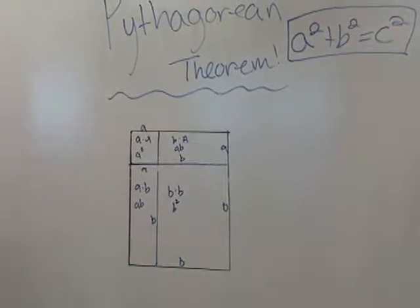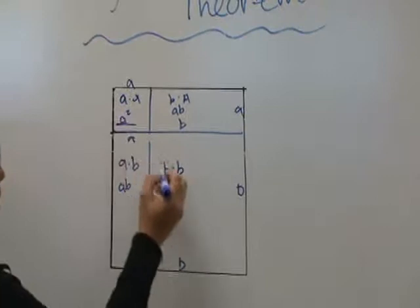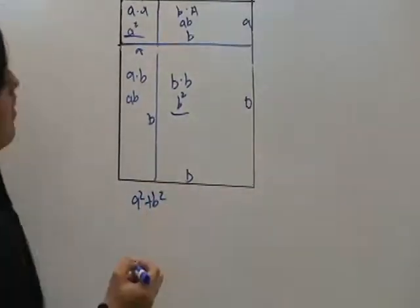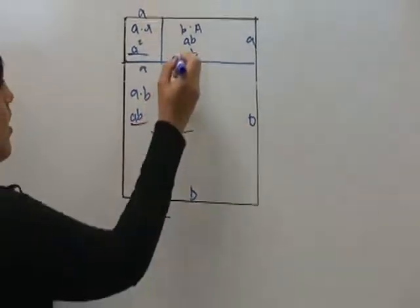Then combine similar shapes. It's A squared plus B squared. And AB plus AB equals 2AB.